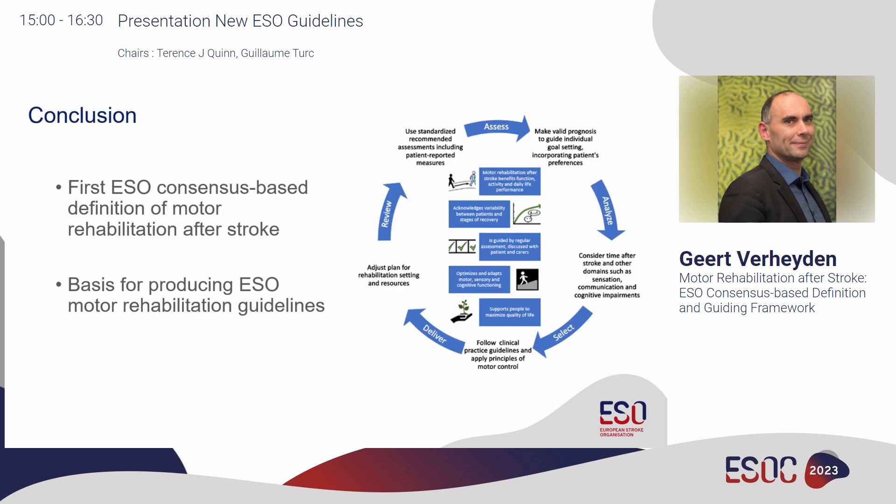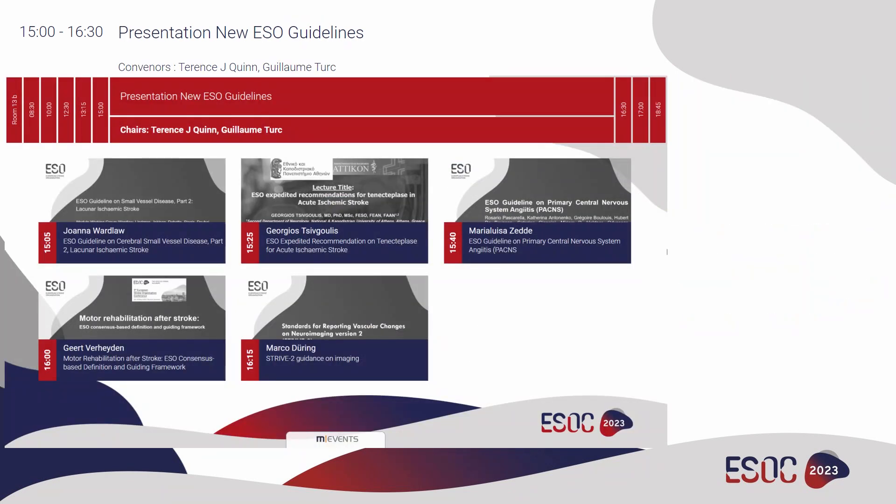In conclusion, this is the first ESO consensus-based definition of motor rehabilitation after stroke, and in our opinion also the first definition of motor rehabilitation after stroke. It is the basis for producing ESO motor rehabilitation guidelines — the current step — in order to advance the domain, build on this summary of knowledge, produce PICO questions specific to the motor rehabilitation domain, and subsequently develop recommendations for clinical practice. Thank you very much.